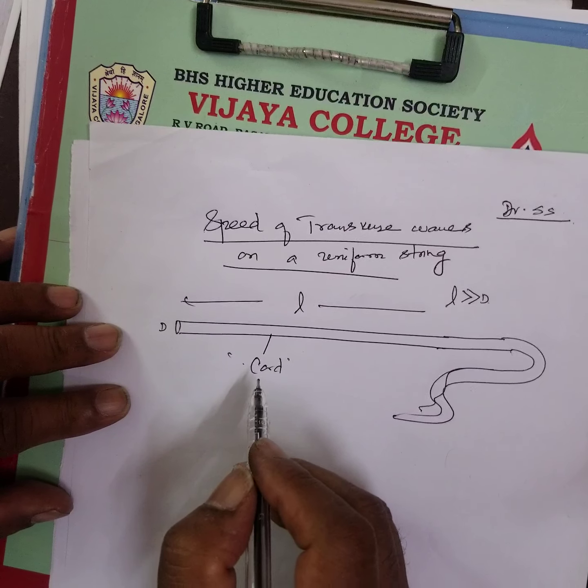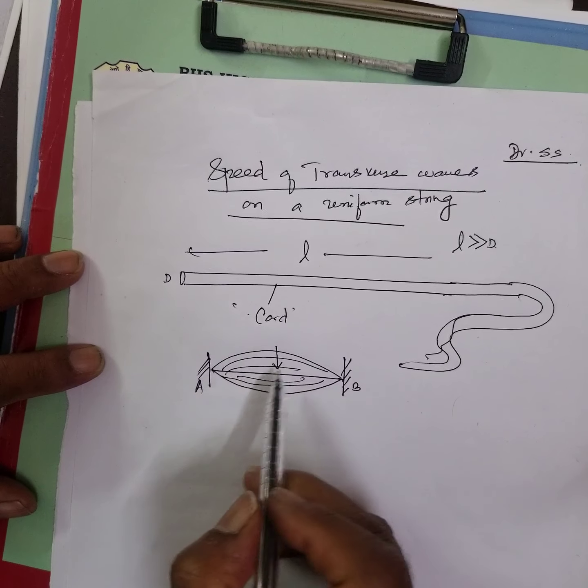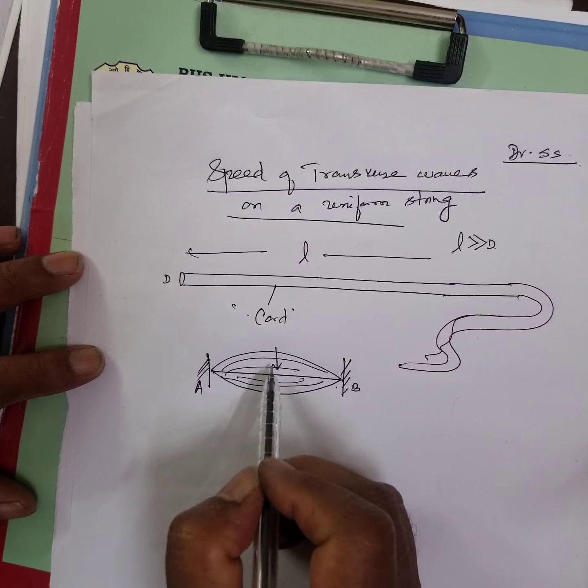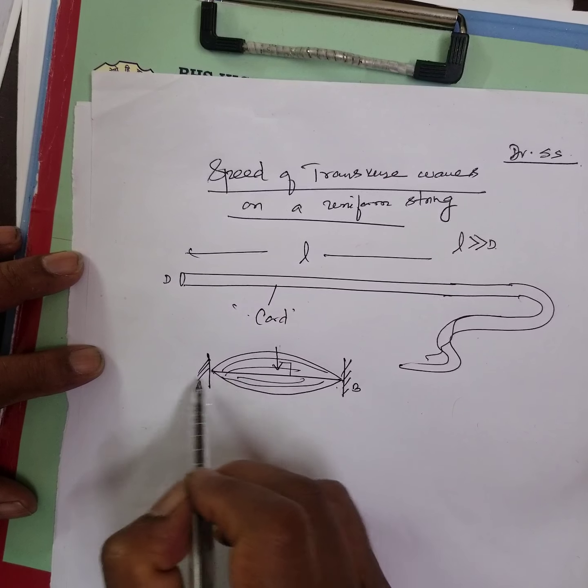Consider a string. D is the diameter and L is the length of the string. A string is a cord whose length is very large compared to its diameter. It is uniformly flexible.